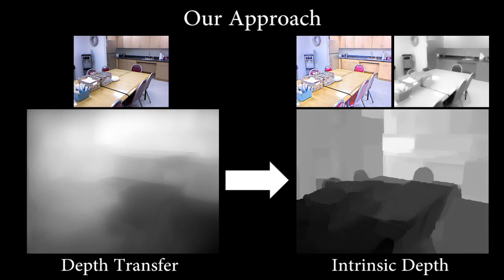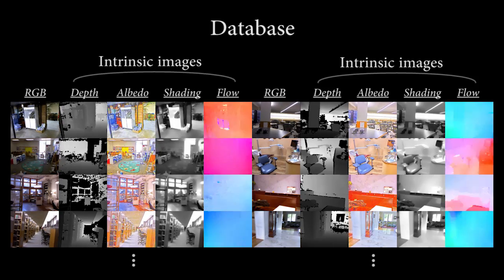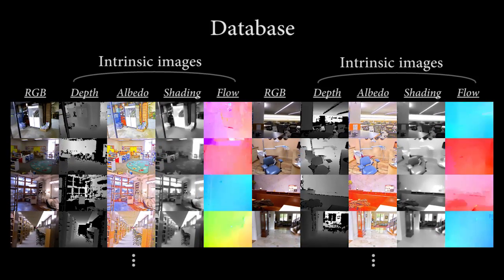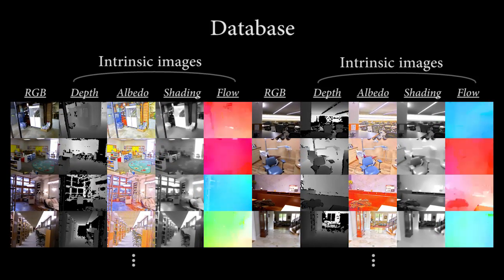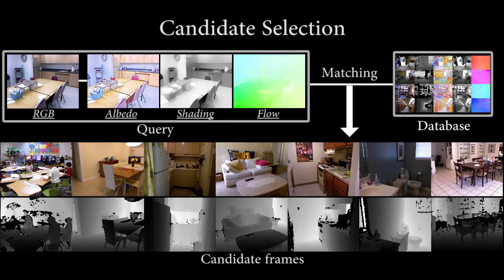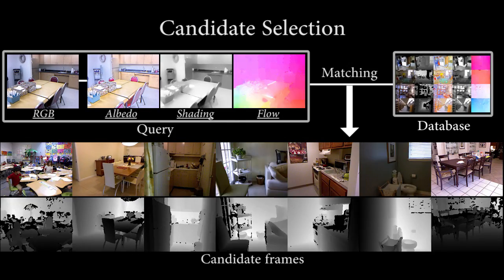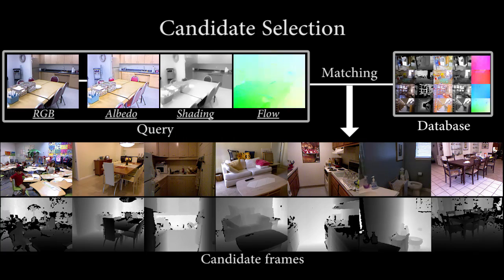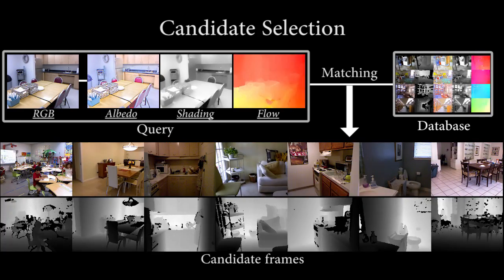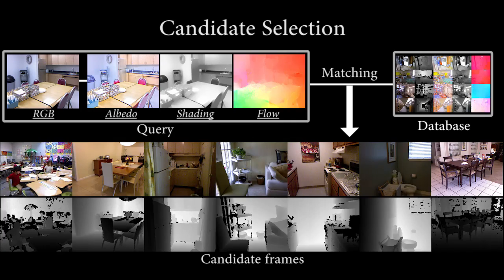We call our method intrinsic depth. Our database of exemplars contains sequences with RGB images, depth maps, albedo, shading, and optical flow. Given a query sequence, we compute the albedo, shading, and flow using the intrinsic video method. We then match patches of RGB, albedo, shading, and flow between the query and the database.